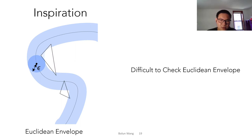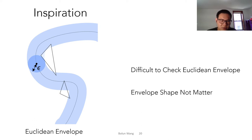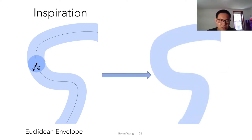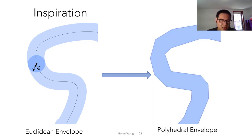So we found it's very difficult to check a Euclidean envelope. Actually, we only need to know if a triangle is close enough to the reference surface — it doesn't matter if the envelope is a Euclidean envelope or not. So instead of using Euclidean envelope, we propose to build a polyhedron envelope inside the Euclidean envelope and check if the query triangles are inside the polyhedron envelope or not, avoiding sampling and making our algorithm exact.